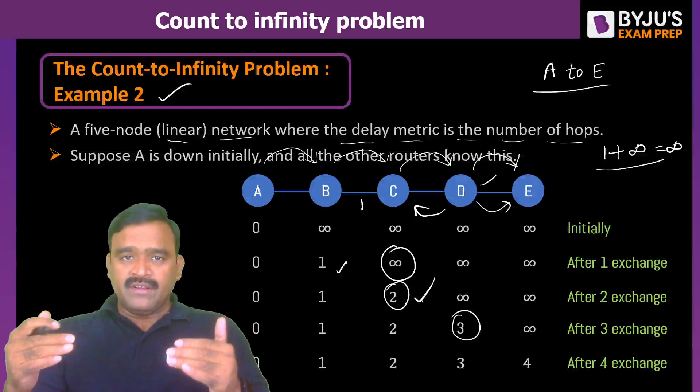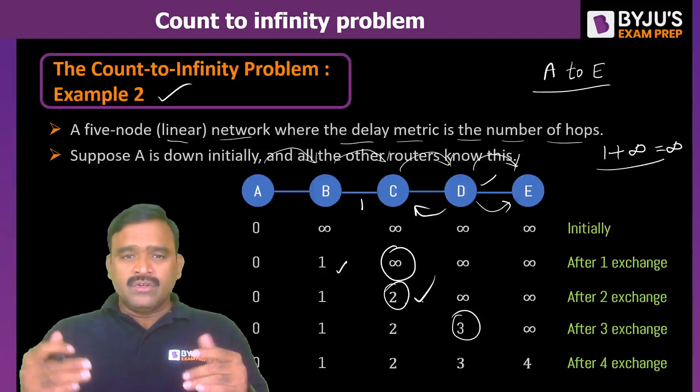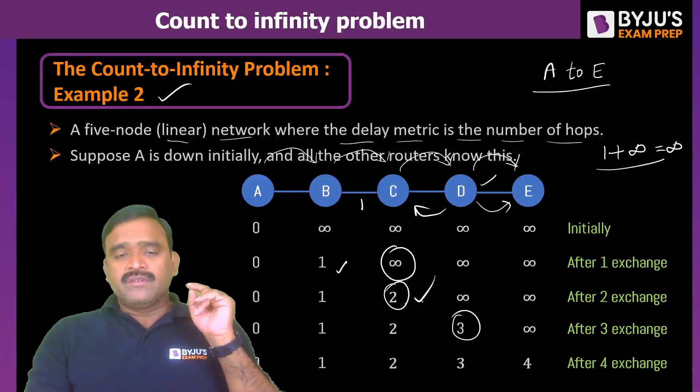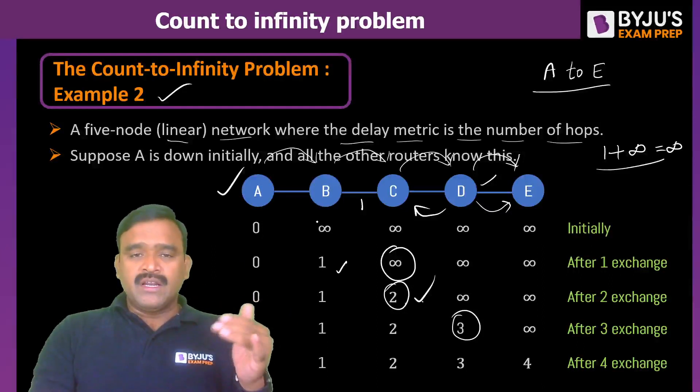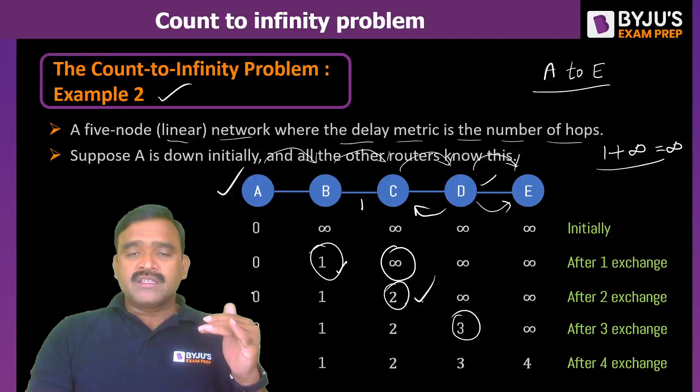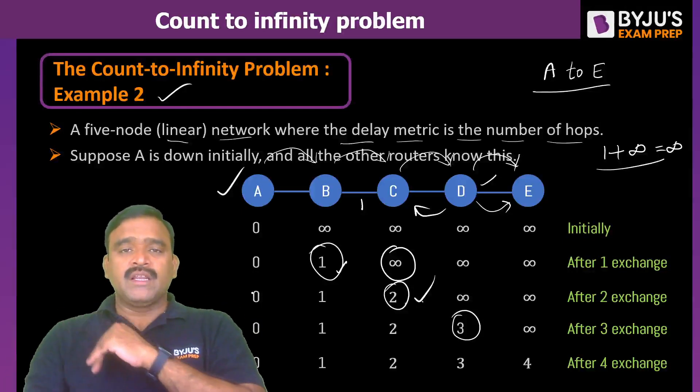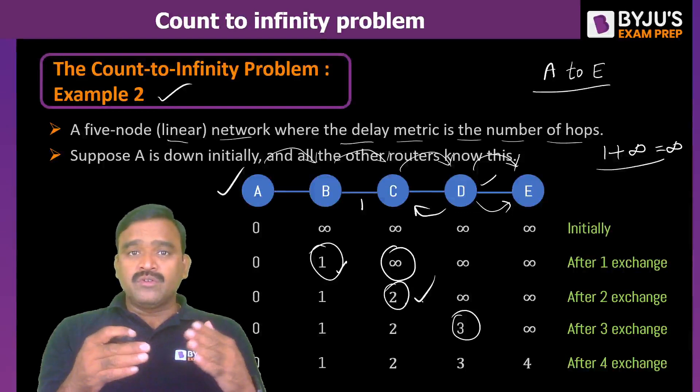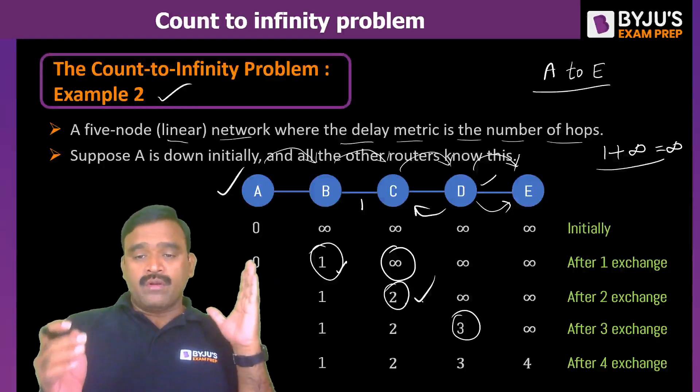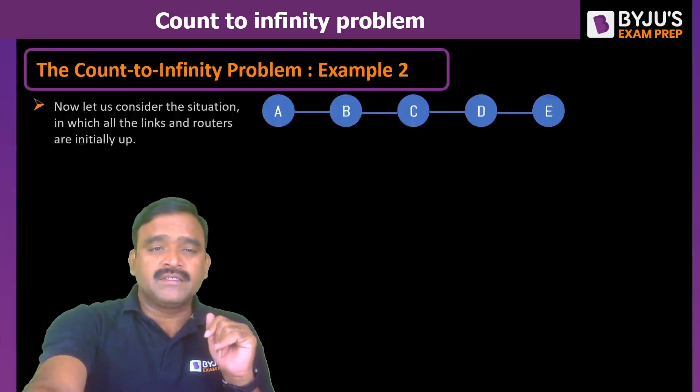This is called good news propagates very fast. Here, what is the good news? When A is ready, A is up. We came to know that it is a neighbor and in the testing packet it understand it is one and it has been propagated like this. Now if any problem has occurred, so bad news. Bad news means if A is down, that is bad news. That propagates to infinity. It is like this.